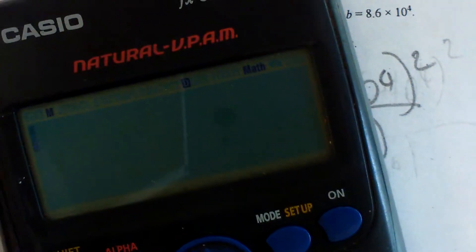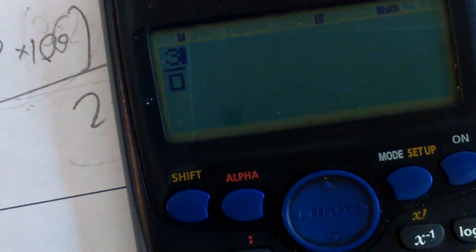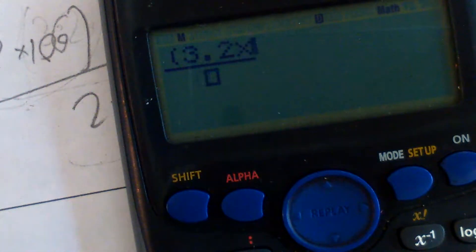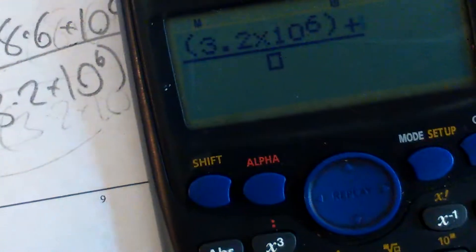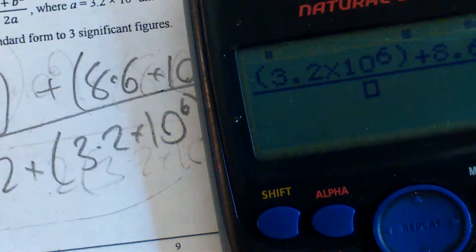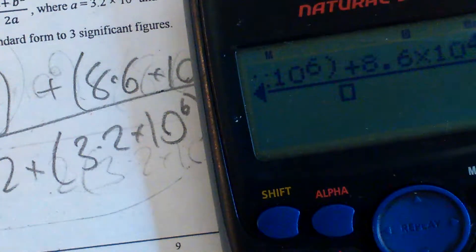Now I've got a decent calculator, so I can actually just type in exactly how it looks. So let's not forget the brackets. 3.2 times 10 to the power of 6, press right, plus 8.6 times 10 to the power of 4, and squared.